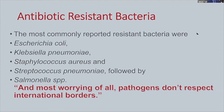Some of the most commonly reported antibiotic-resistant bacteria are E. coli, very common in human and mammalian intestines; Klebsiella pneumoniae; Staphylococcus aureus; and Streptococcus pneumoniae, followed by Salmonella species. When these bacteria become antibiotic resistant, they can be very dangerous and difficult to kill. Most worrying of all, pathogens don't respect international borders — as we realized with the recent COVID-19 pandemic.